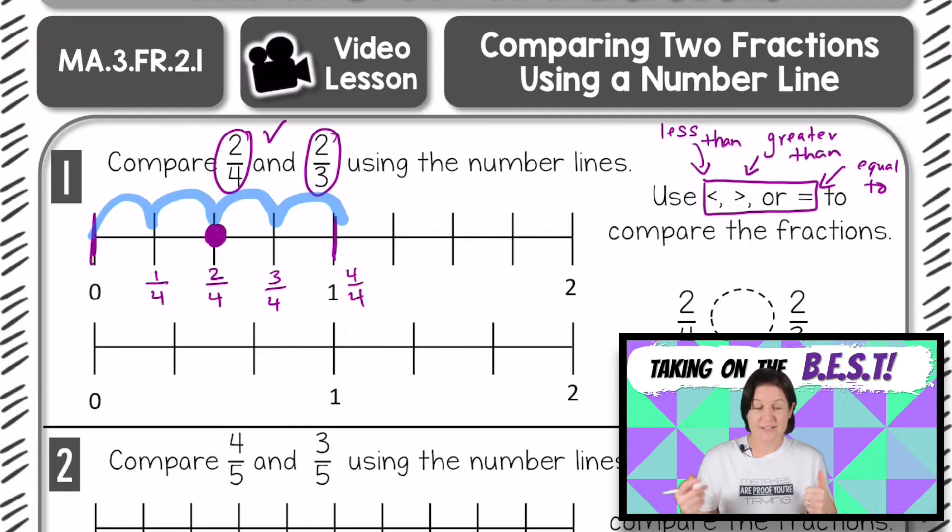We've got 2/4. Now let's plot the point for 2/3. The next number line we're given, we have zero, we have one, and if this number line is correct, we should have 1, 2, 3 equal points, 3 equal jumps between each whole, which it does. So we can say this first jump would be 1/3, 2/3, and then one would be 3/3. But our whole goal here is to plot the point 2/3.